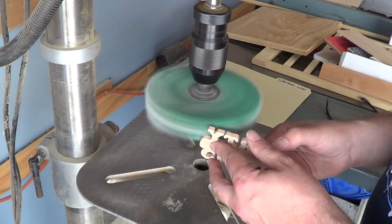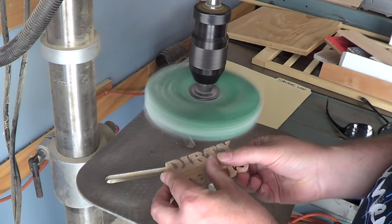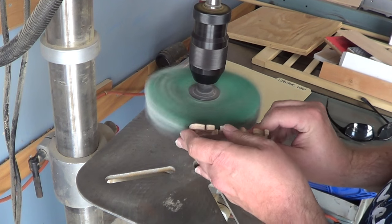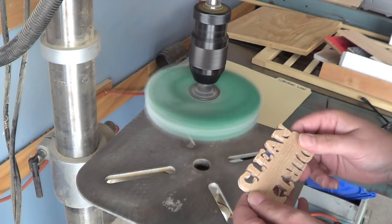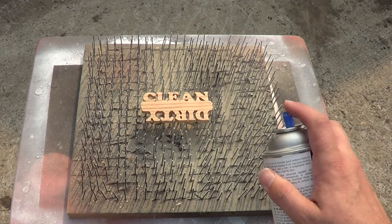Then I take it over to my flap sander and I kind of soften the edges a little bit. Just hold onto the workpiece pretty tightly because this thing can send the workpiece across the room pretty quickly. I had a couple of coats of clear acrylic spray.